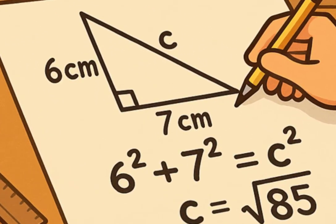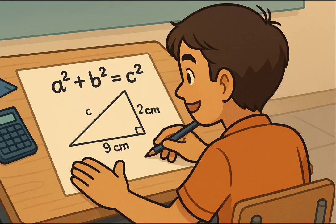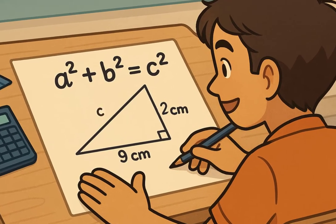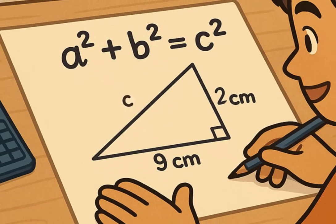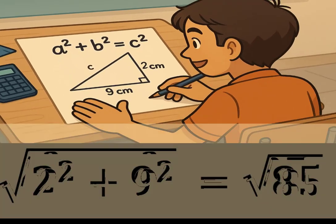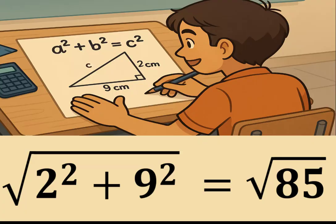Let's try it. For option A, if the two legs are two and nine, then the hypotenuse is the square root of two squared plus nine squared. That is square root of four plus 81, which equals square root of 85.